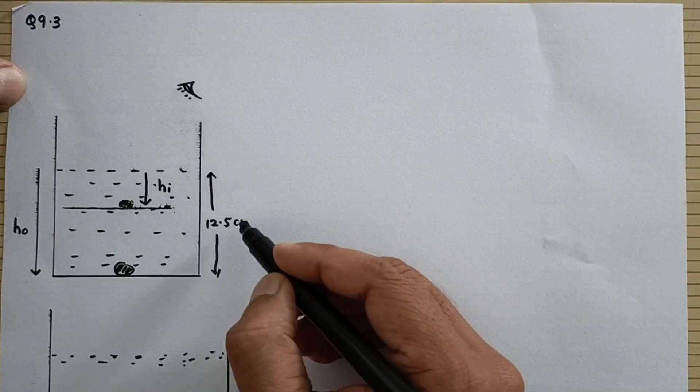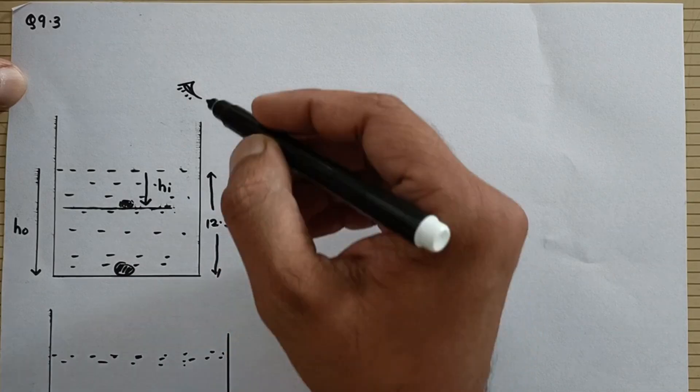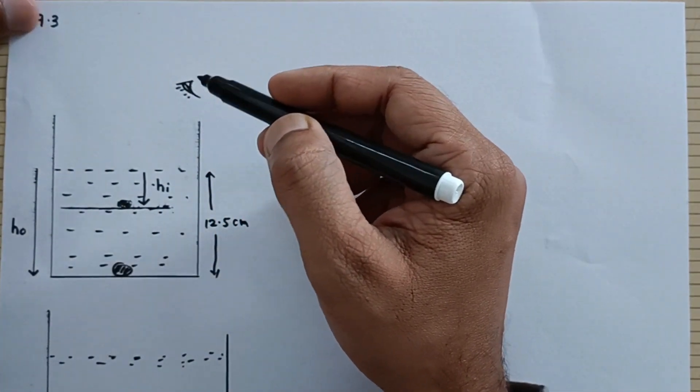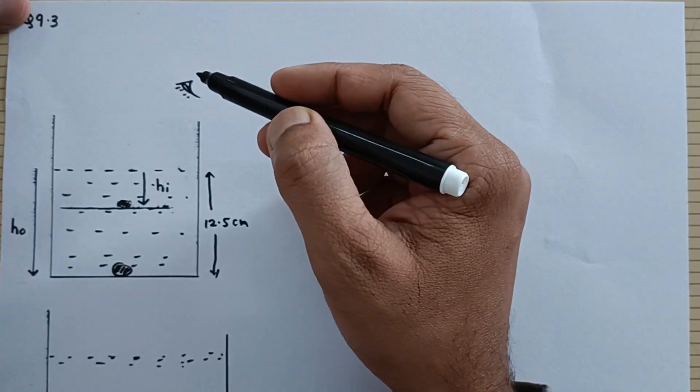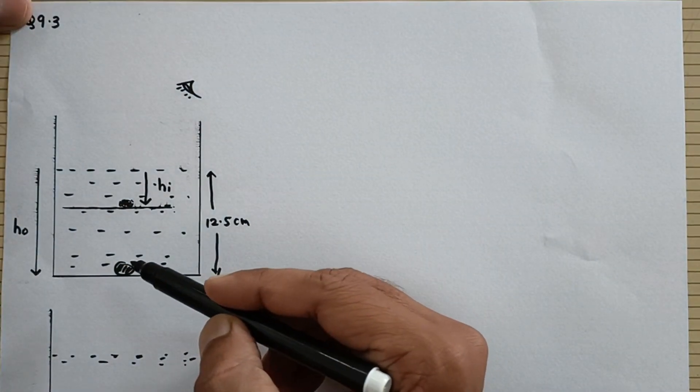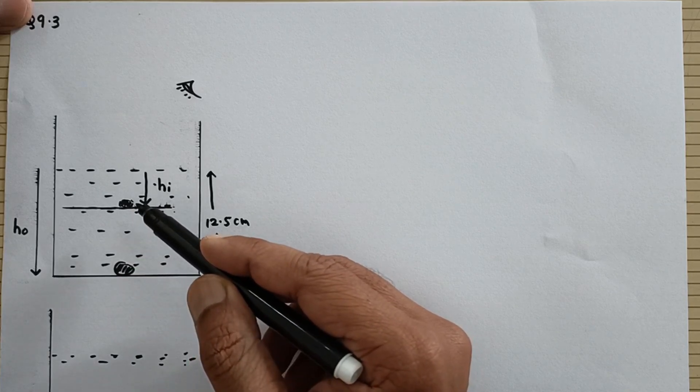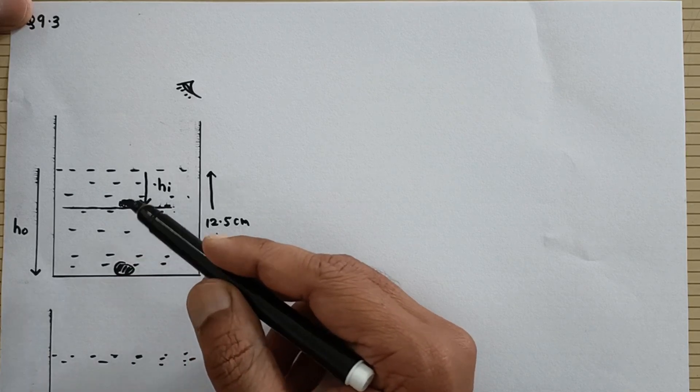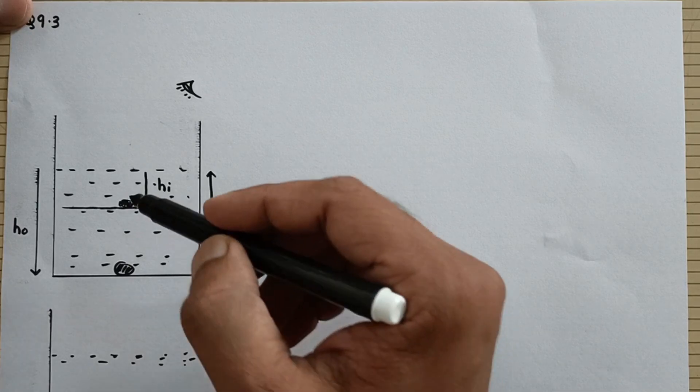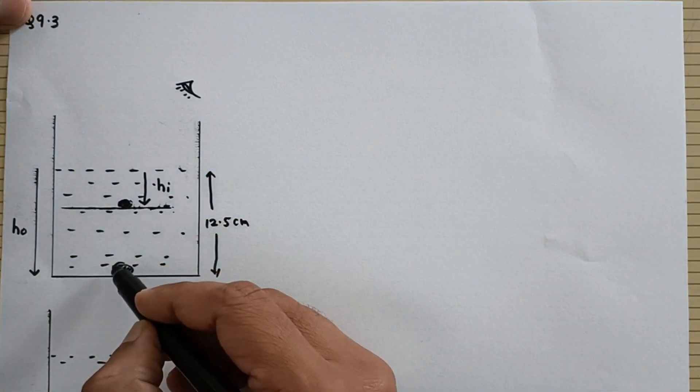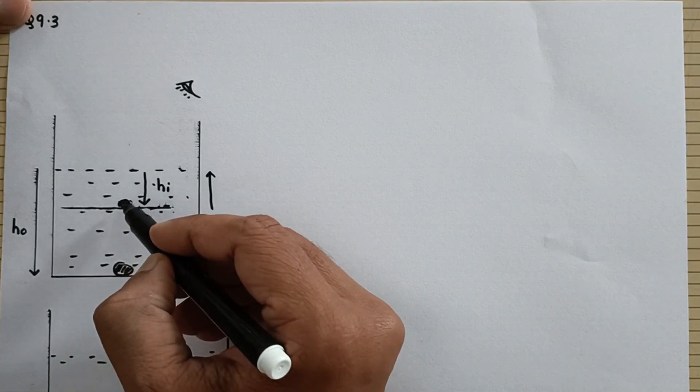So that is why I am going to call this as HO, the real depth. Now when you are going to look from the rarer medium or when the observer is in the rarer medium, the base or the object which is at the bottom appears to be raised up due to the refraction. This is the location where the base or the object at the bottom is going to appear.